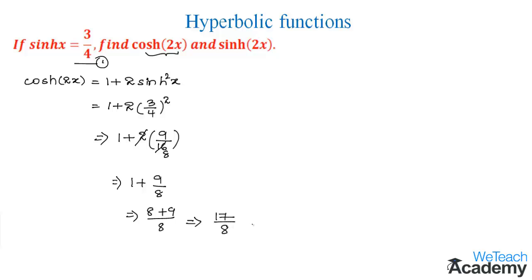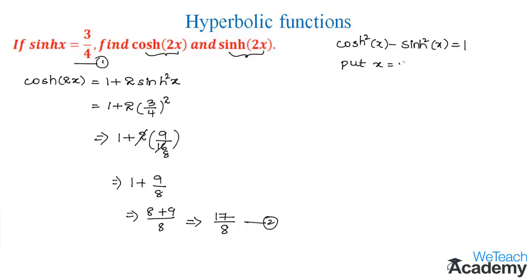So 17/8 is the value of hyperbolic cos 2x — let us name this as equation 2. To find the value of hyperbolic sine 2x, we need the identity: hyperbolic cos squared x minus hyperbolic sine squared x equals 1. Substituting 2x for x in this identity, we get hyperbolic cos squared 2x minus hyperbolic sine squared 2x equals 1.